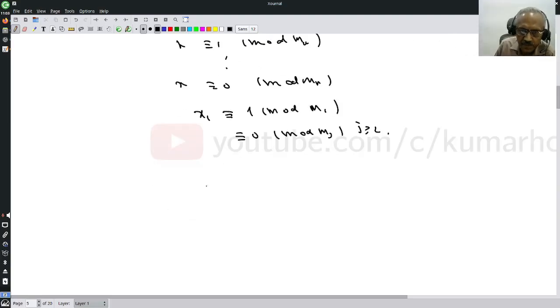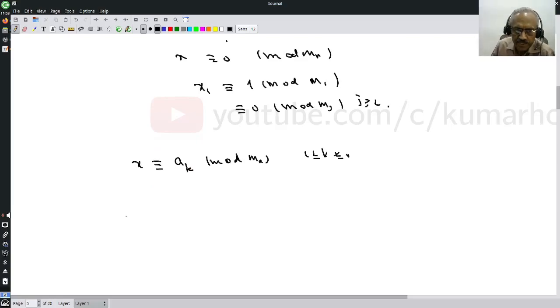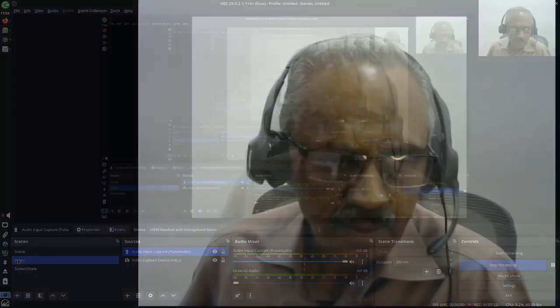Now suppose I want to solve x is congruent to ak mod mk for 1 less than or equal to k less than or equal to n. This is the proof you will see in elementary number theory textbooks.